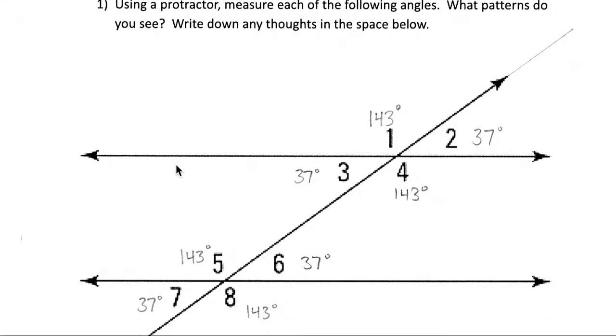First of all we could take a protractor to this diagram and we could use our protractor to measure these angles and visualize some of the angles that are congruent and then other pairs of angles that are supplementary or add up to 180.